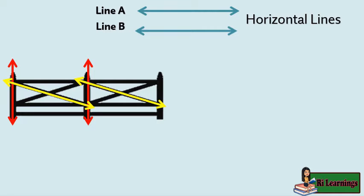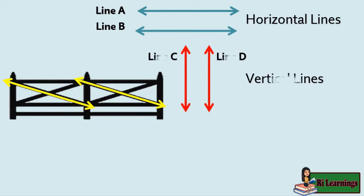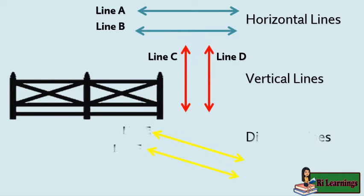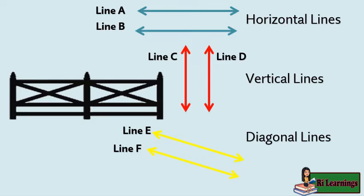Line A and line B are horizontal lines. Line C and line D are vertical lines. Line E and line F are diagonal lines. The pairs of horizontal lines, vertical lines, or diagonal lines are examples of parallel lines.